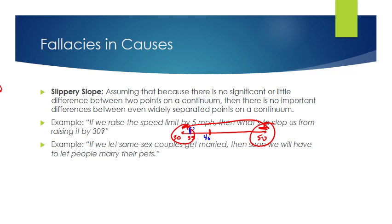Slippery slope is often used in gun control debates: 'if we do background checks, soon the government will take all our guns.' We can draw lines between a background check and full-on gun confiscation. Slippery slope is good rhetorically — it scares people and gets them riled up — but it's not necessarily sound reasoning.